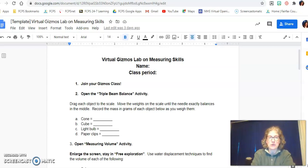Hi, this is Murdoch and I want to give you some guidance on how to do the virtual Gizmos lab on measuring skills. This has been posted for you in your Google Classroom and you'll have your own copy. You will type your name here. For example, my name is Julia Murdoch and you would type your first and last name and class period, whether you're in period one or period three.